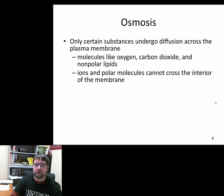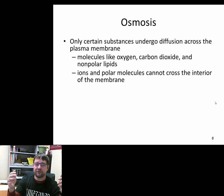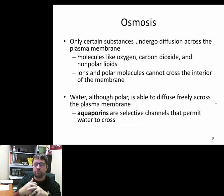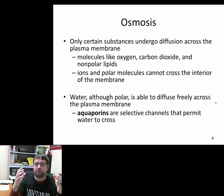That brings us to osmosis, which is a special form of diffusion. Plasma membranes only allow certain things to cross — specifically things that won't react negatively with the nonpolar lipids. Things that are polar or have charges often can't move across that membrane. Osmosis refers to the movement of water down a concentration gradient. Because water is vital to living organisms and is polar, it can move across membranes through aquaporins — a very selective channel for water.